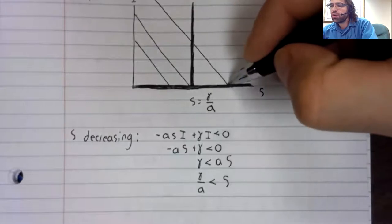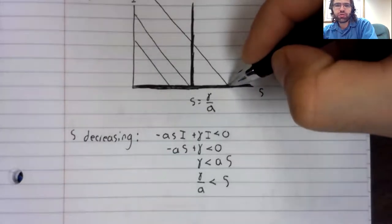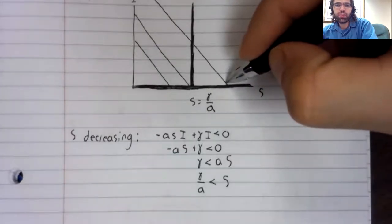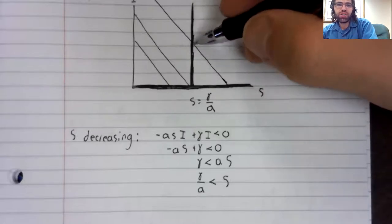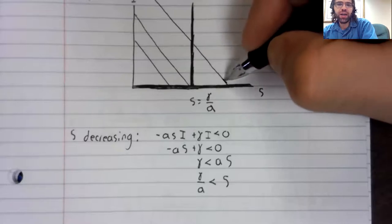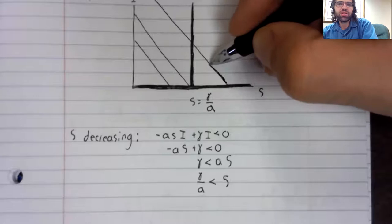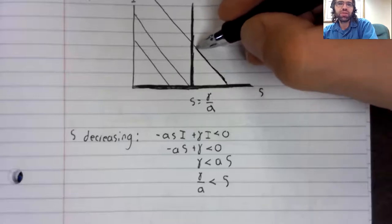And we find that S is decreasing when S is larger than gamma over A. So if we start on this trajectory, for example, as time passes, S decreases. And because we're stuck on this line, S decreasing means that S is going up this line.